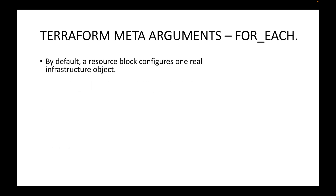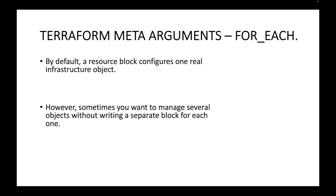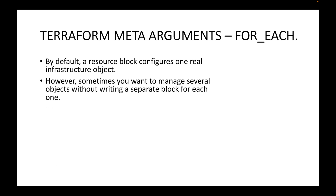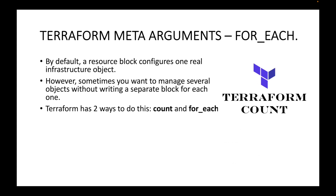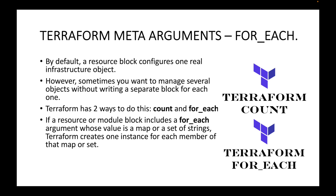By default, one resource block creates one real infrastructure object. If you want multiple resources we make use of the count meta argument. However, sometimes you may want to manage several objects without writing a separate block for each one. Terraform has two ways to do this: count and for_each. In this session we will look at the for_each meta argument.